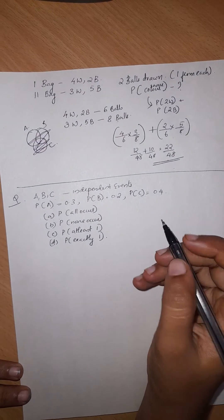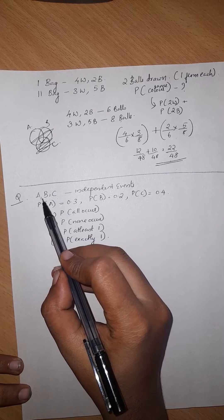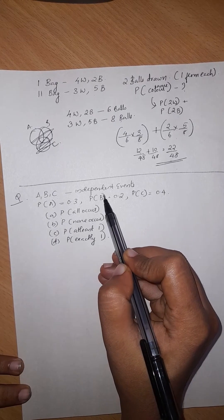Okay, so probability based is a little variety question that I am going to discuss. The question is, there are three events A, B and C which are independent events.